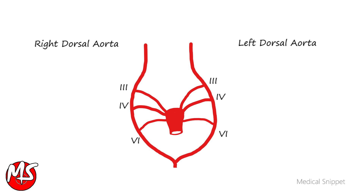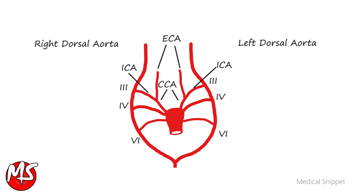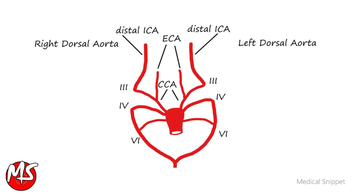The third arch forms the common carotid arteries and the proximal part of the internal carotid arteries. The external carotid artery arises from a sprout of the third aortic arch. The dorsal aorta between the third and fourth arch disappears, so the distal internal carotid artery is formed by the cranial portion of the dorsal aorta.